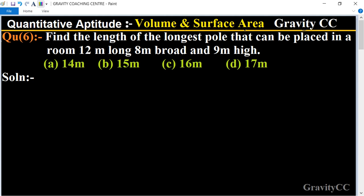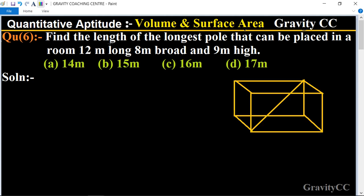In this question, the dimensions of the room are given: length is 12 meters, breadth is 8 meters, and height is 9 meters. So find the longest pole that can be placed in this room.